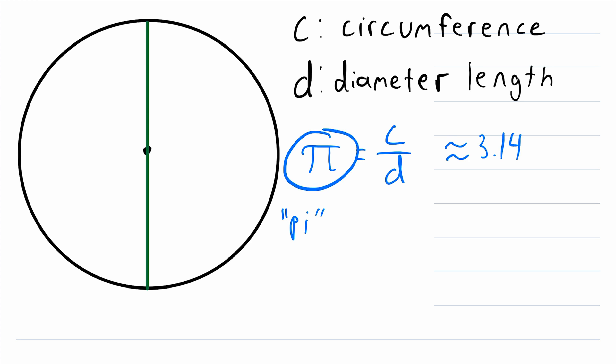But the decimal expansion of pi goes on infinitely, and the digits never follow a pattern, which is why if we're going to write it in decimal form, we have to approximate it. So if we want to work with the exact value of pi, we have to just settle for writing it like this.